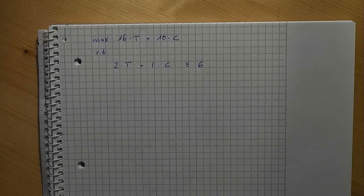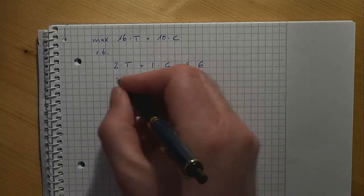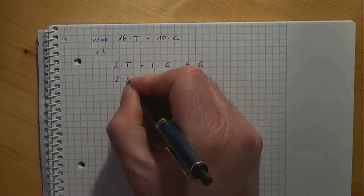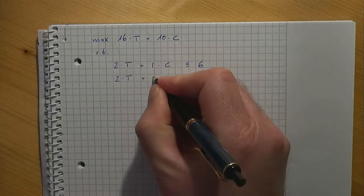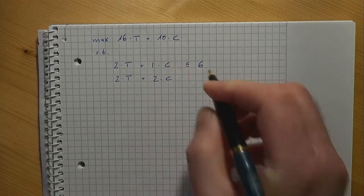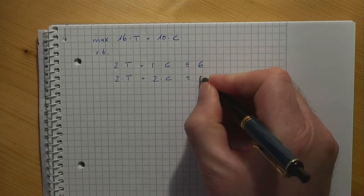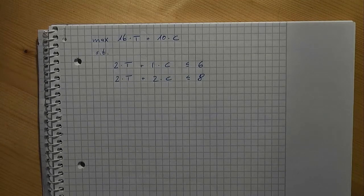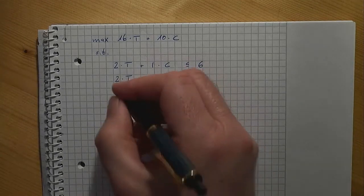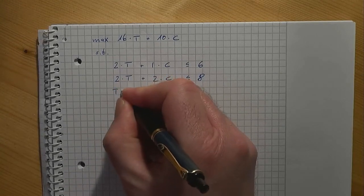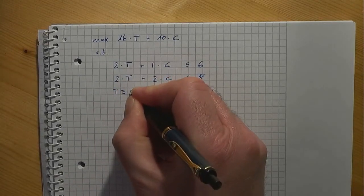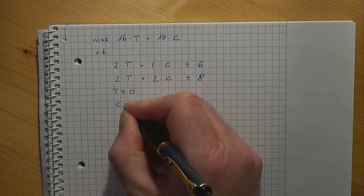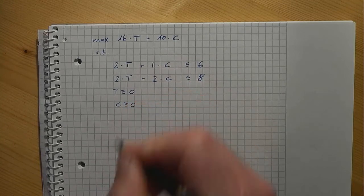Likewise the number of used 2x2's must be less than or equal to 8. Two times the number of tables plus 2 times the number of chairs is less than or equal to 8. And finally the number of tables and chairs cannot be negative. T is greater than or equal to 0 and C is greater than or equal to 0.